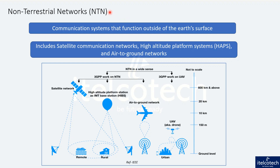Let's understand what non-terrestrial networks are. Unlike telecom networks which work on the surface of the earth, non-terrestrial network communication systems work outside the surface of the earth. It includes different kinds of networks — it could be satellite communication, high-altitude platform systems, or air-to-ground networks. 3GPP is working primarily on these communication networks operating outside the earth's surface.